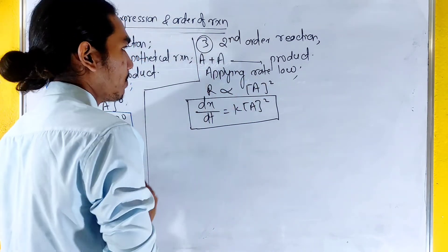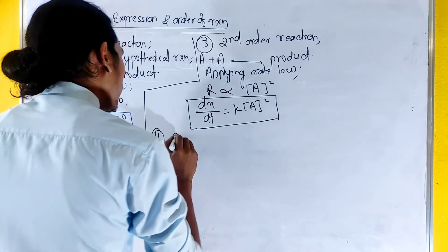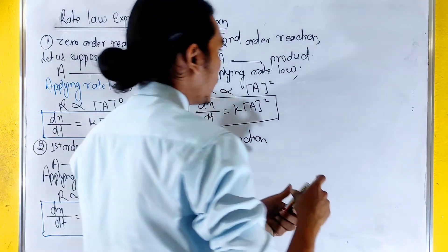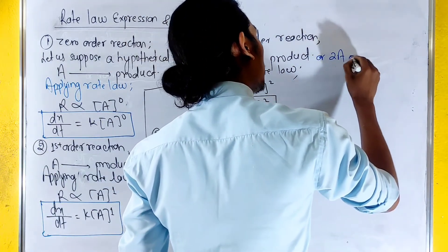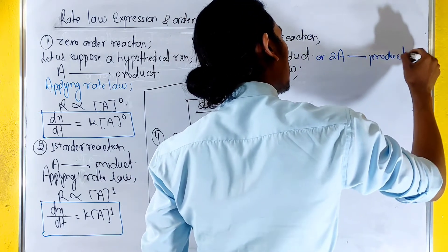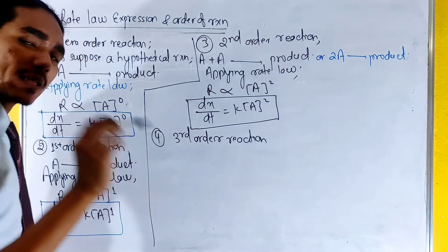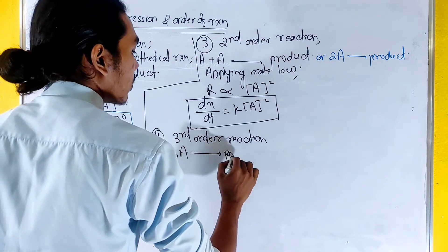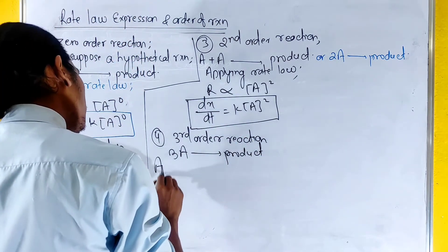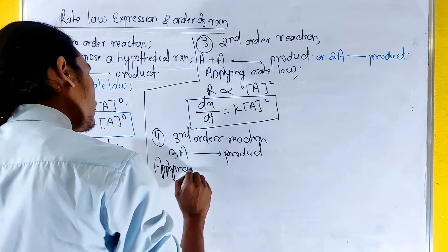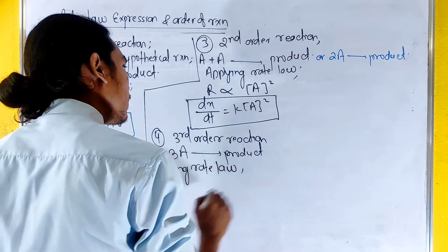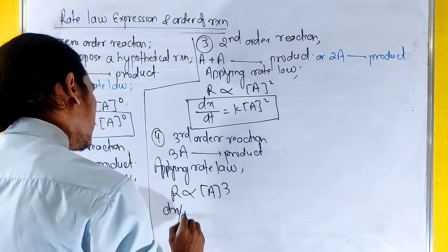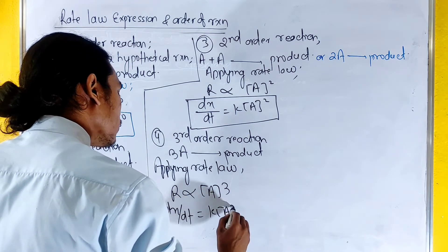Third order reaction: suppose 3A gives product. Applying rate law, rate is equal to k times A to the power cube. That is, dx/dt equals k times A to the power 3. This is the third order reaction.